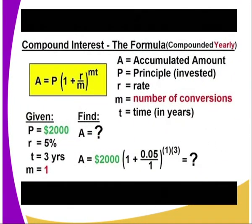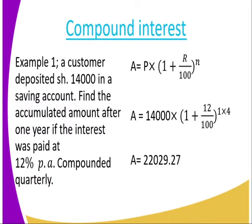We go to the examples. Using the Compound Interest formula, given principal = $2,000, rate = 5%, and time = 3 years, you are asked to find the amount. You substitute: $2,000 × (1 + 5/100)^3. You calculate and work it out.